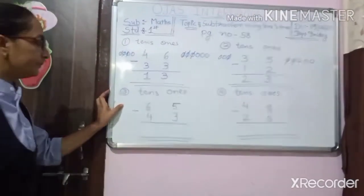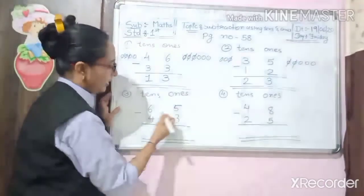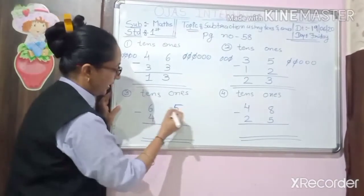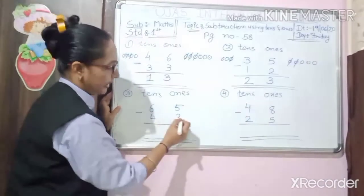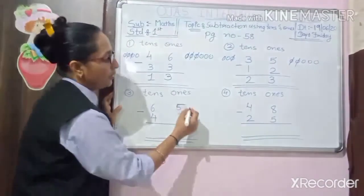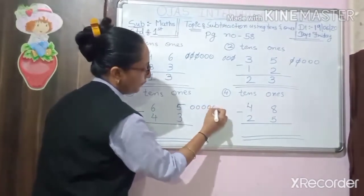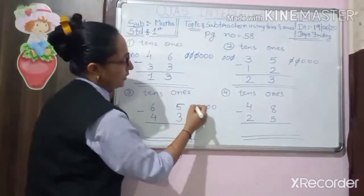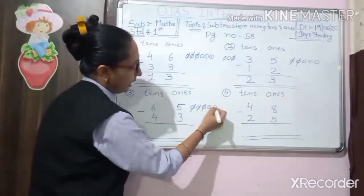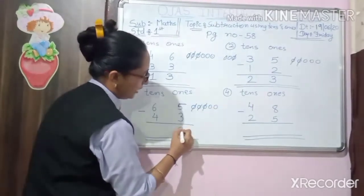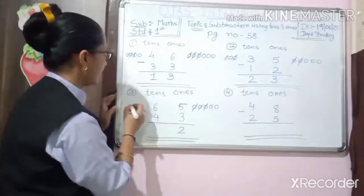Number 3, tens and ones: 65 minus 43. So 1, 2, 3, 4, 5. Cut 3: 1, 2, 3. Cut and we have to remain 2 circles.